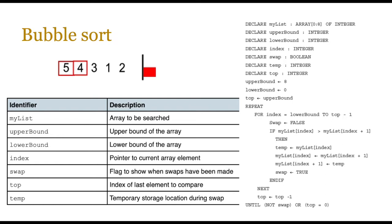If you think about this, we're going to declare all these identifiers. We're going to set the upper and lower bound to zero. We're going to make sure that the top is equivalent to the upper bound because that's the final item there, and then we're going to use a loop. So in this case we're going to keep on repeating this until swap is false or we reach top equals zero, which means there's no more top.